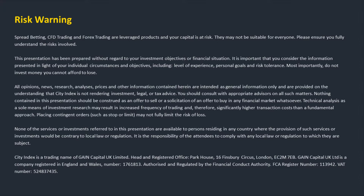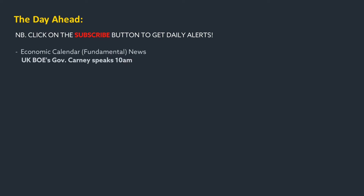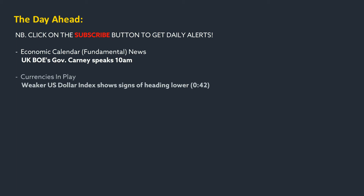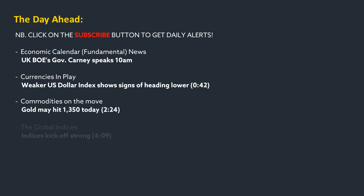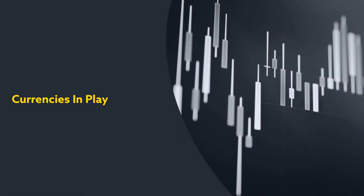Good morning, I'm Adam Harris and this is The Day Ahead. Don't forget to click Subscribe below to receive daily market analysis videos and important alerts. On the economic calendar today we have the UK's governor Carney speaking at 10 a.m. In currencies we see signs of a weaker US dollar index. In commodities, gold looks keen to attempt another run up to 1350. In the global indices, a strong finish to the previous week indicates more upside potential. In equities there are fresh divides between US and other equities. You can jump to any chapter by clicking the time link in the description below.